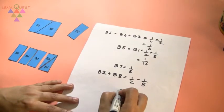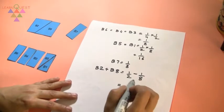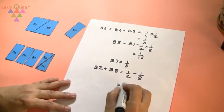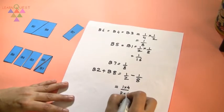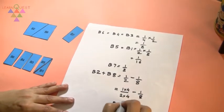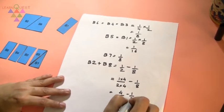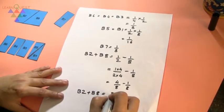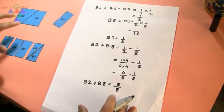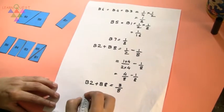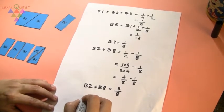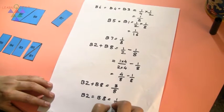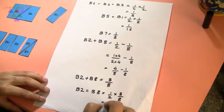Now I have to find out half minus 1/8. Let me convert half into a fraction with denominator 8. So 1 times 4 divided by 2 times 4, that is 4/8. So I have B2 plus B8 equals 4/8 minus 1/8, which is 3/8. Now since both of them are of exactly the same size, I will have each piece as half of 3/8. So it will be half times 3/8, which is 3/16.